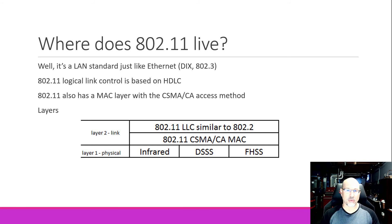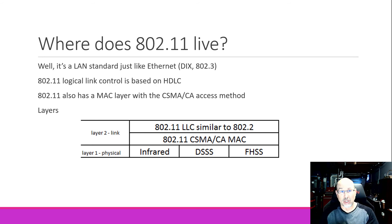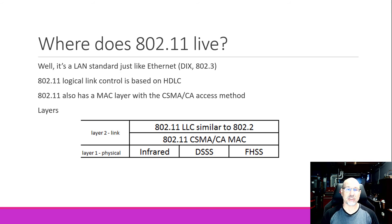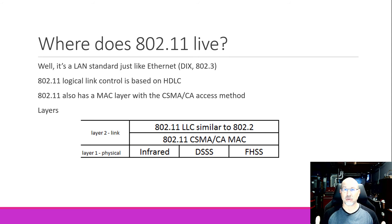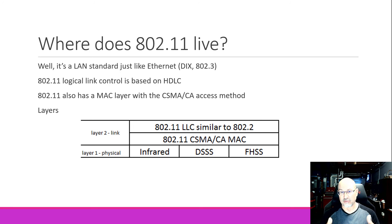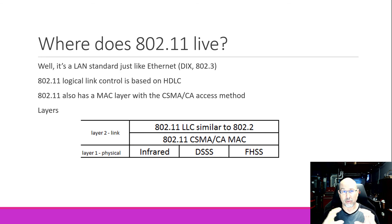Where does 802.11 live? I keep calling it a local area network standard, and so it is. Think of Ethernet — any time you unplug Ethernet, you can just plug 802.11 right in there. 802.11 has a layer 2 and layer 1, all the stuff we associate with a LAN standard: logical link control for framing, an access method for deciding whose turn it is to talk, and the physical layer. Nodes on a wireless network still use IPv4 or IPv6, TCP and UDP — none of that changes. The only thing happening is we've completely supplanted layer 1 and layer 2 Ethernet with layer 1 and layer 2 802.11.